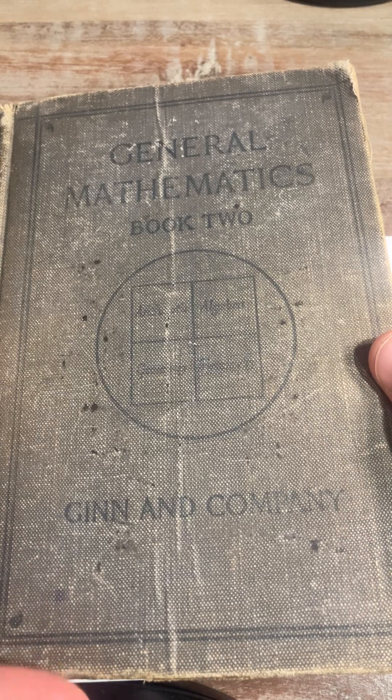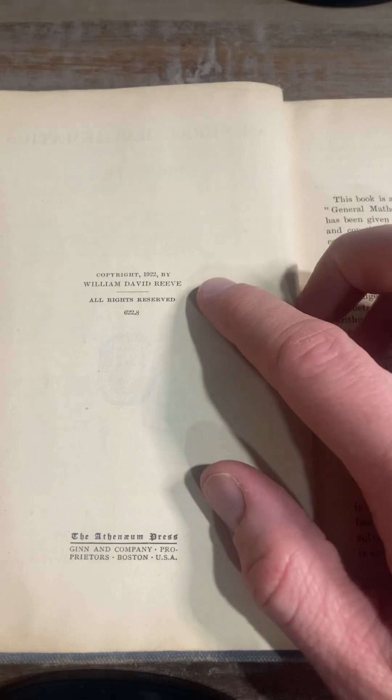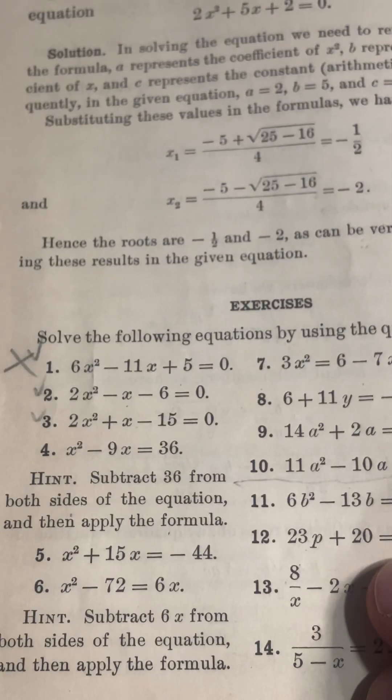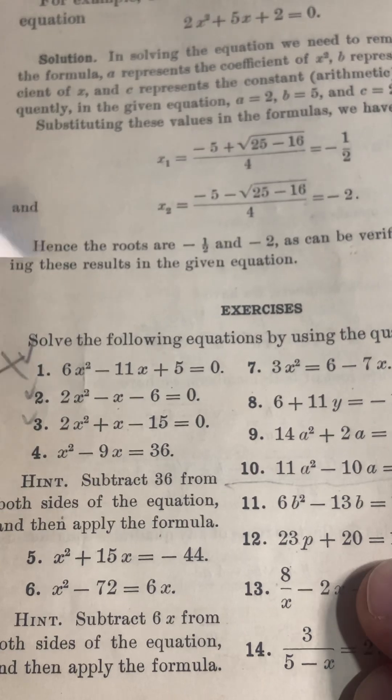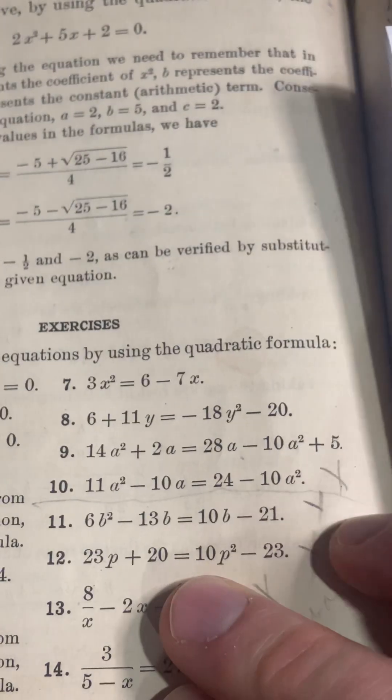Today I'll be doing a problem from this general mathematics book written in 1922. The problem I'm going to be doing is number four: solve the following equations by using the quadratic formula.